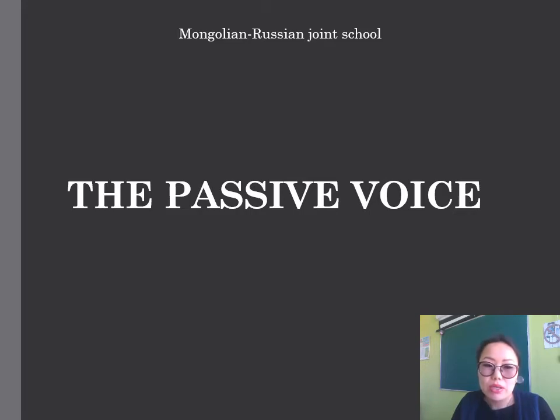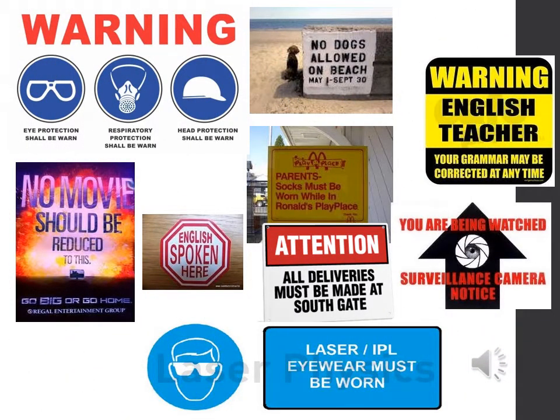Stay with me through this entire lesson. Keep focused — it's not that long. First of all, I want you to have a look at some signs. For example: 'No dogs allowed on the beach,' 'Warning — English teacher, your grammar may be corrected at any time,' 'You are being watched,' 'All deliveries must be made at Southgate,' 'English spoken here,' etc. All these sentences are given in the passive.